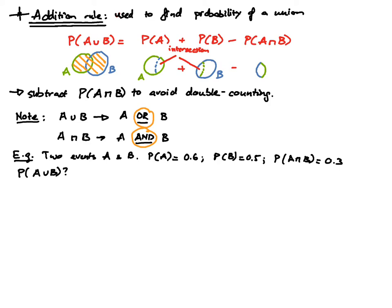According to the addition rule, the probability of A union B equals the probability of A plus the probability of B minus the probability of the intersection of A and B. P(A) is given as 0.6, P(B) is given as 0.5, and the probability of the intersection is given as 0.3. Doing the math, the probability of A union B is 0.8.